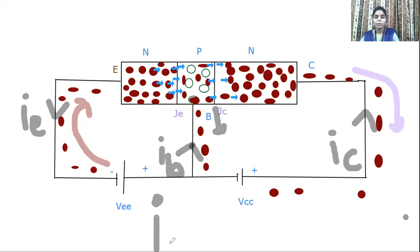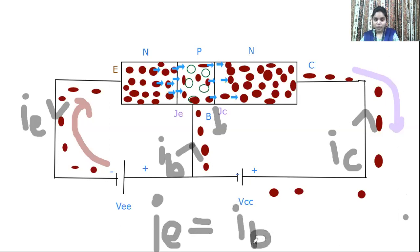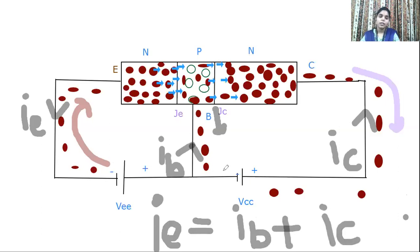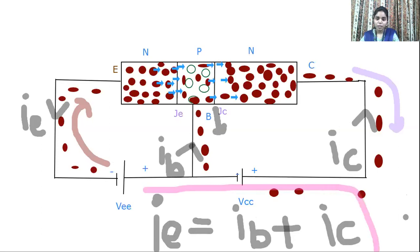By looking at the current flow in the diagram, we can write: IE equals IB plus IC. This is what we can observe from this diagram of the NPN transistor operation.